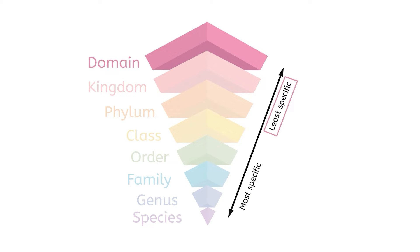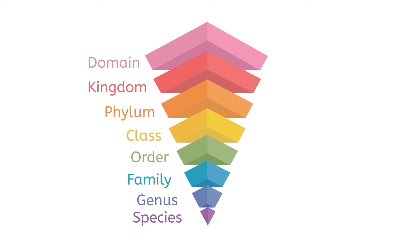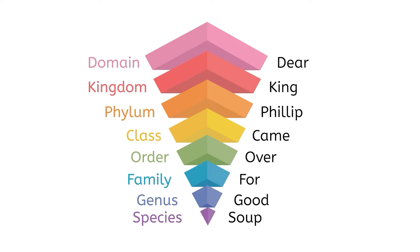Domain is the broadest or least specific level, including millions of different organisms, while species is the most specific and includes only one type of organism. To help you remember the order of these levels, let's use a mnemonic device — for example: 'Dear King Philip came over for good soup.' The first letter of each word represents the first letter of each level of taxonomy from top to bottom. You may choose to use this one or create your own.